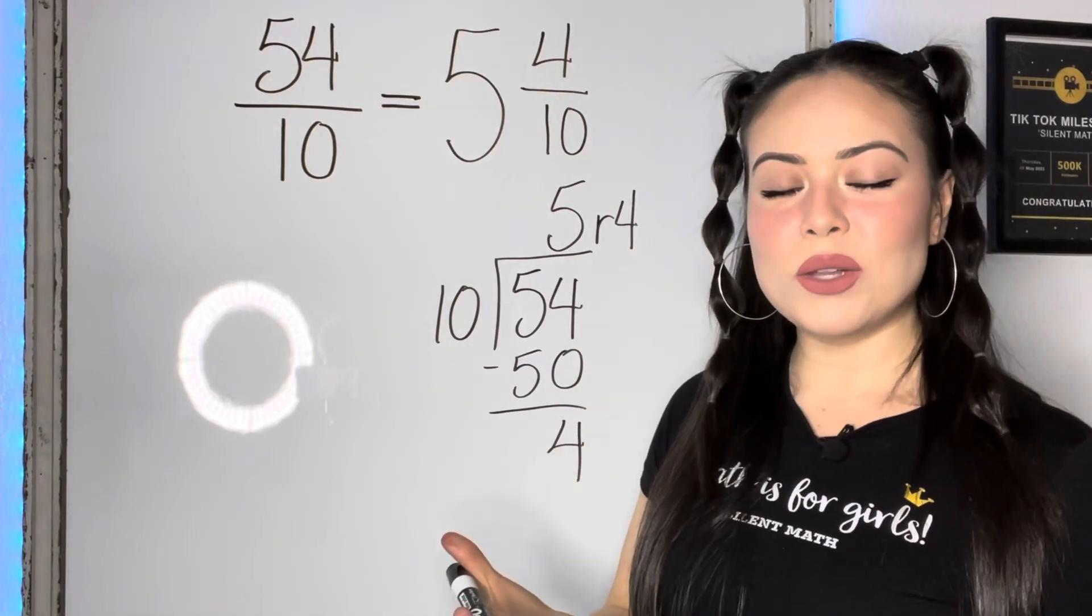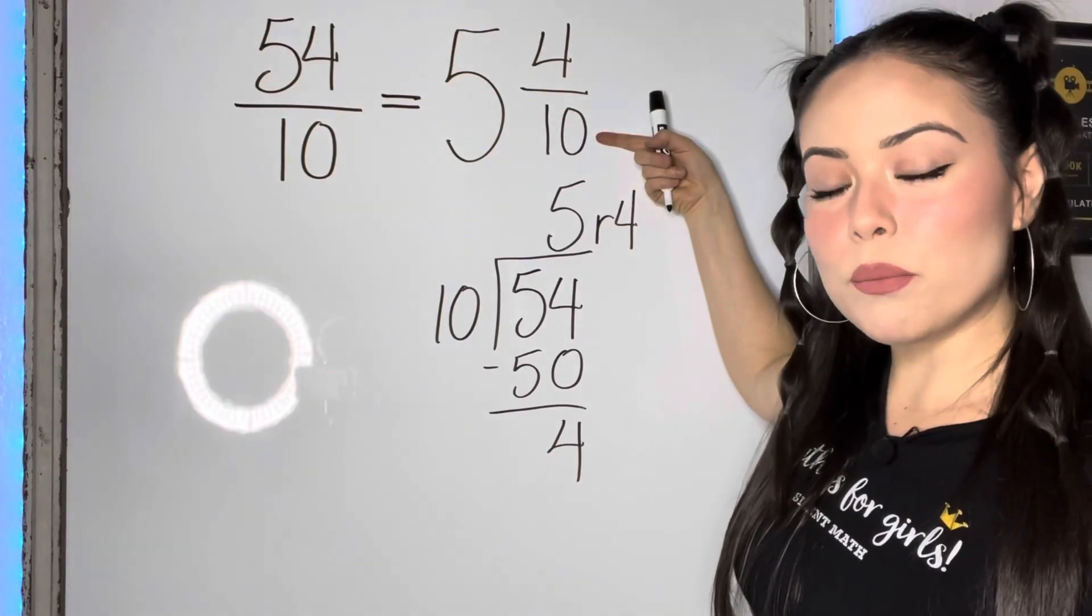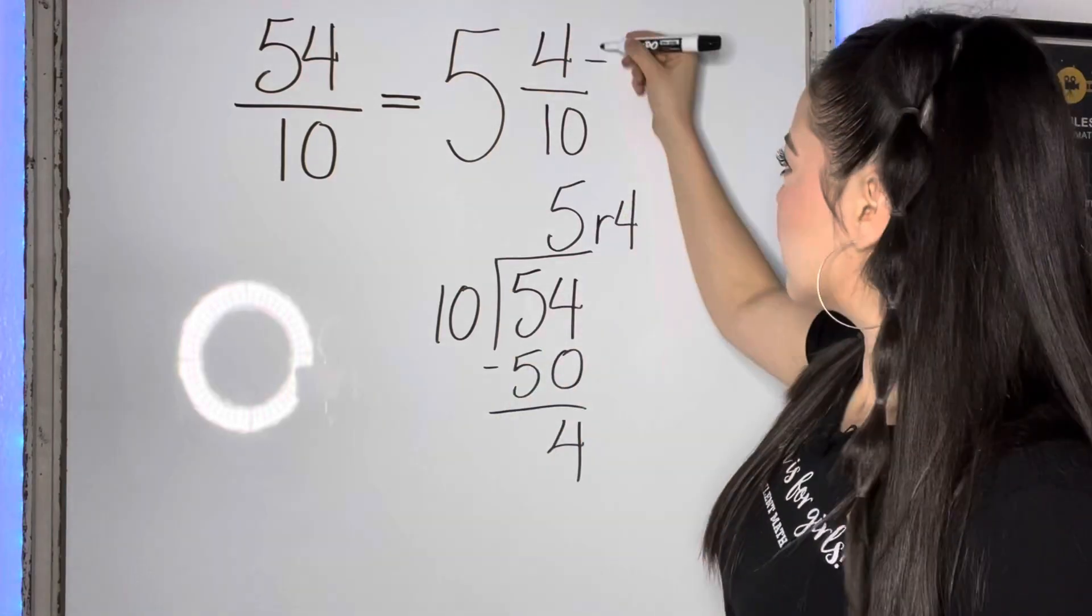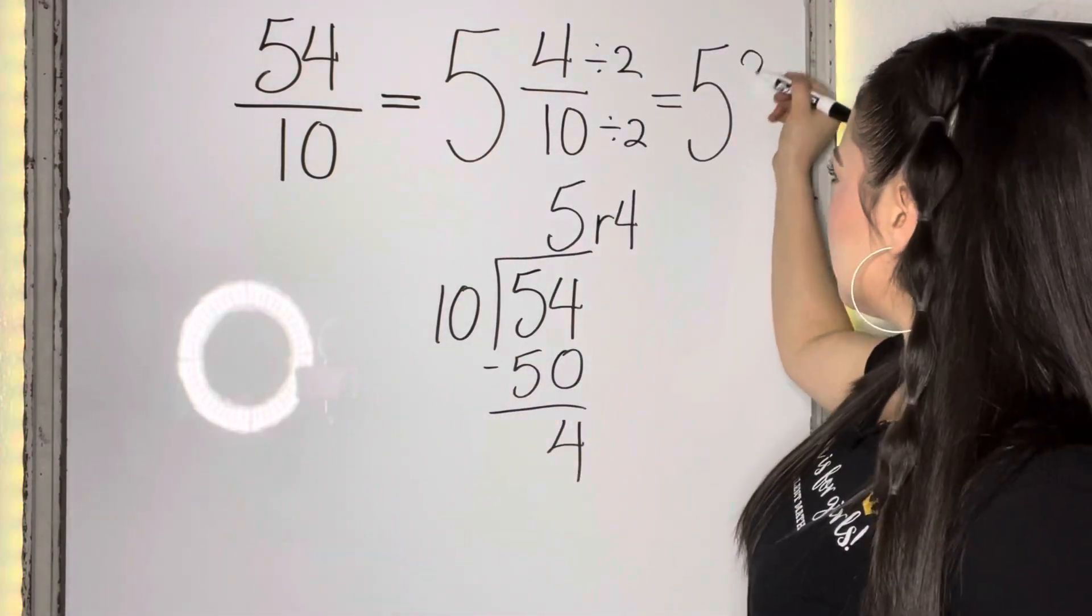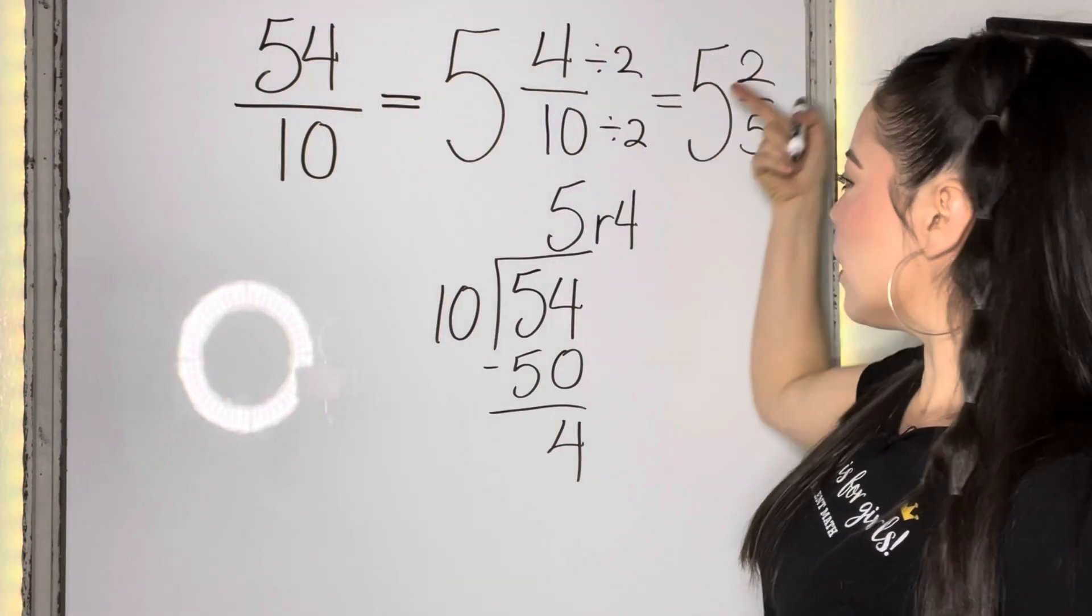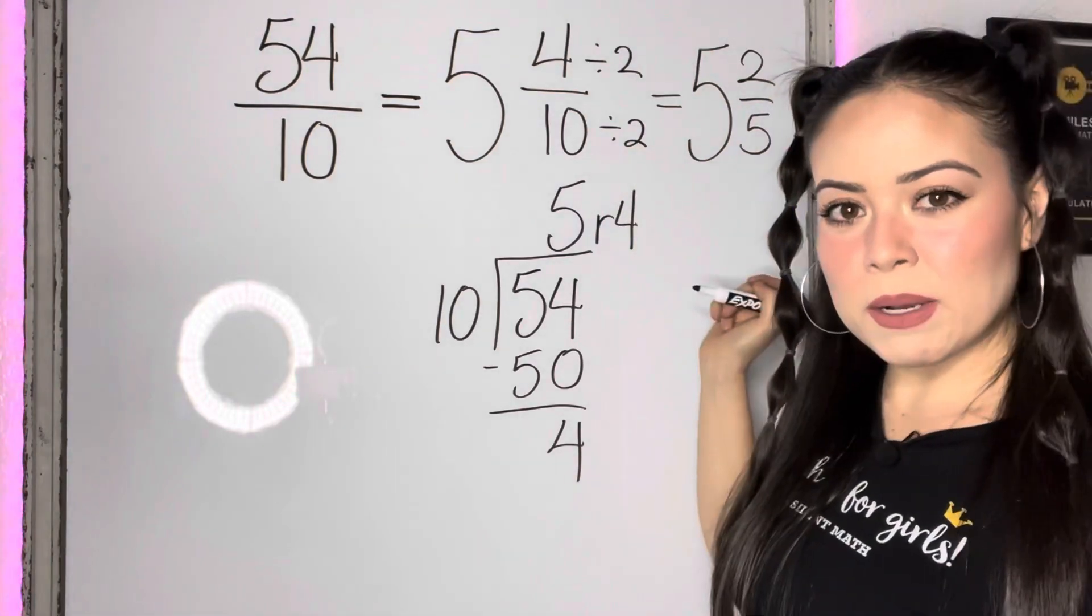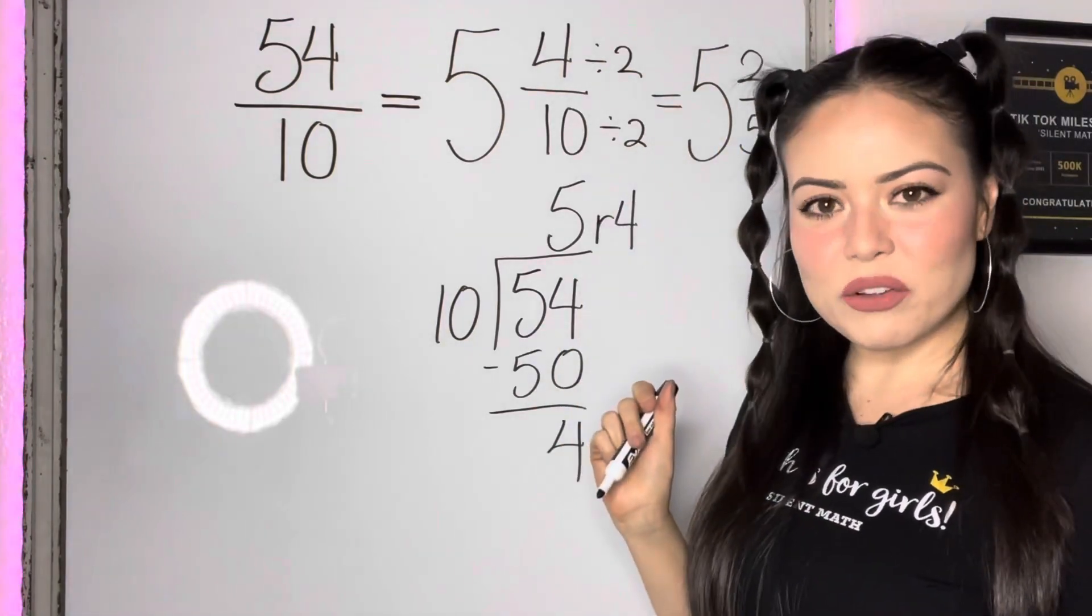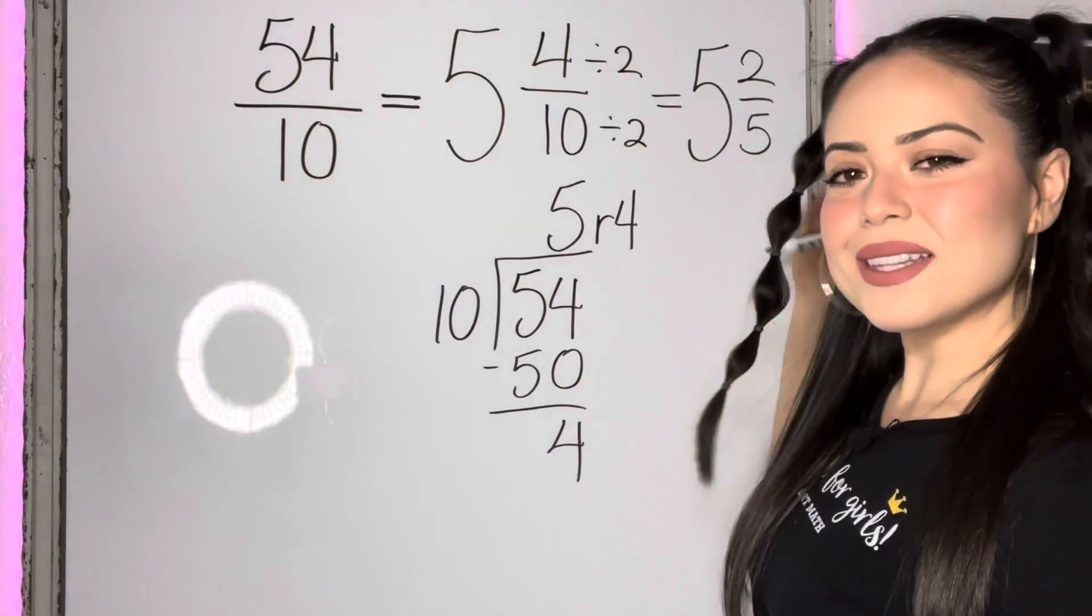Because usually we do like to simplify our fractions. If you see our numerator and denominator, these numbers are both even. So when your numbers are even, we can divide by two. So now we'll get five and two fifths. Again, I got this two because we did four divided by two is two, and 10 divided by two is five. Two and five are prime numbers, and they also don't share any other factor besides the number one. So we are done simplifying. And so 54 tenths is equivalent to five and two fifths.